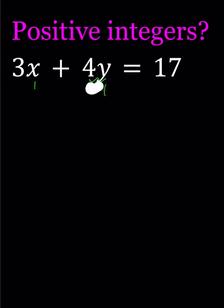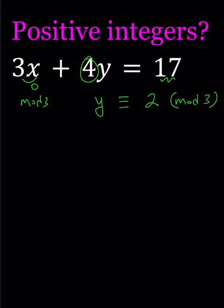So we can use a modular arithmetic approach here. If you think about the remainders like mod 3, this is 0 mod 3, this is 1y mod 3, and this is going to be 2 mod 3. So y needs to be 2 mod 3.